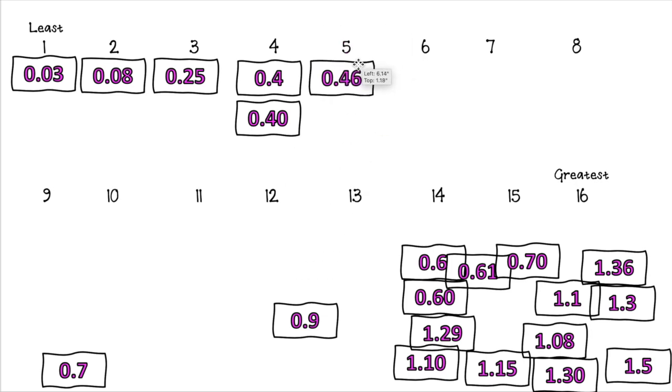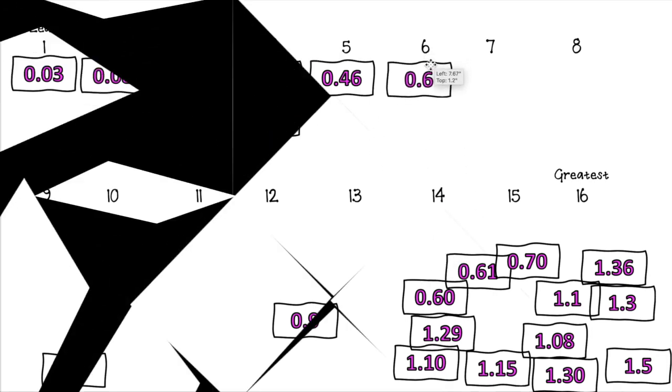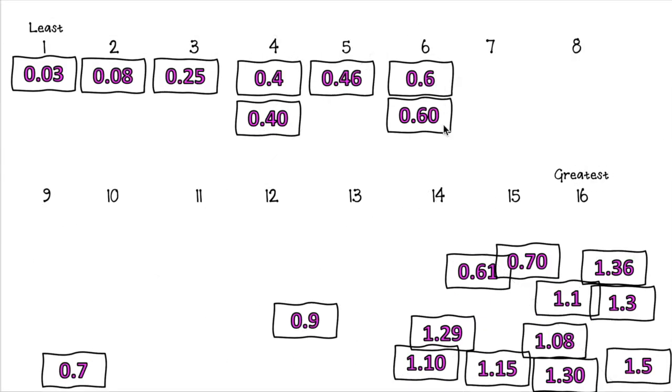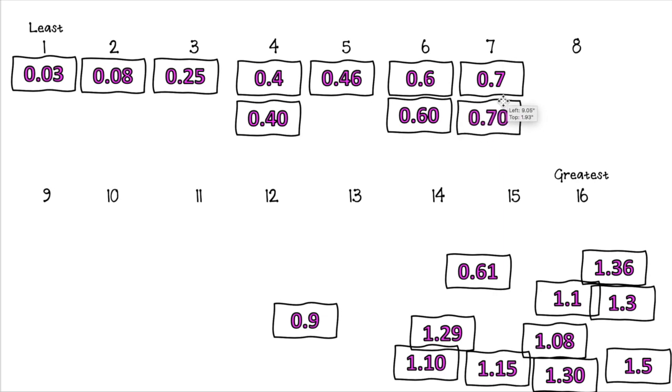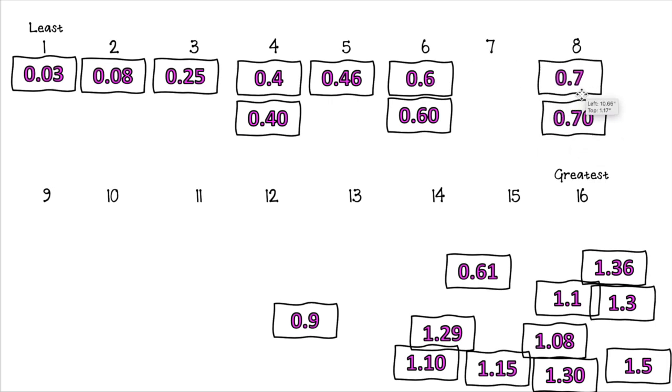Then I see 46 hundredths. Then I'm going to go to the sixties, 6 tenths, equivalent to 60 hundredths. Then I have 7 tenths, which will be equivalent to 70 hundredths. Here it is. And then I have 61 hundredths, so I have to rearrange these two.